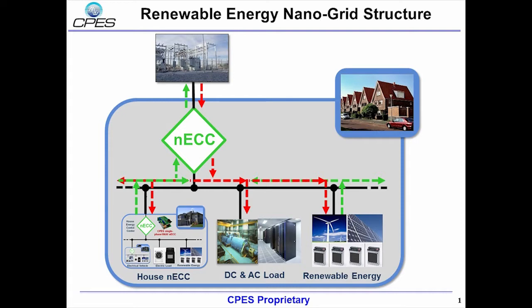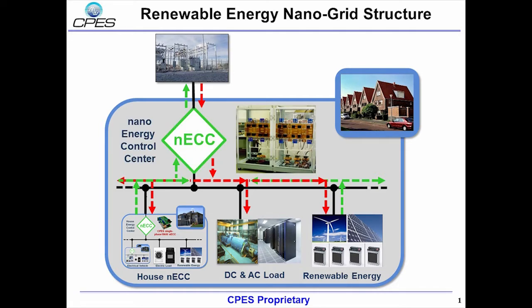This page shows the nanogrid structure which contains different renewable energy sources, energy storage, and loads. Our 3-level power conversion system serves as grid interface and energy control center for the nanogrid.